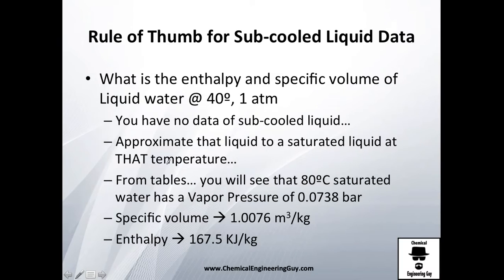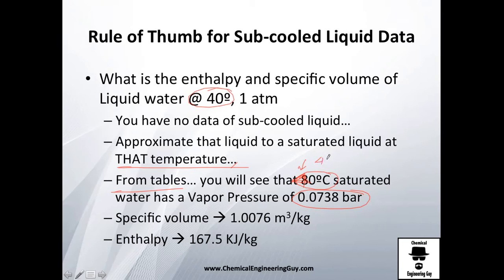From the saturated tables, you look up 40°C and find the corresponding temperature and pressure values right there. So from the vapor table you get the enthalpy and specific volume at the saturation condition for 40°C.